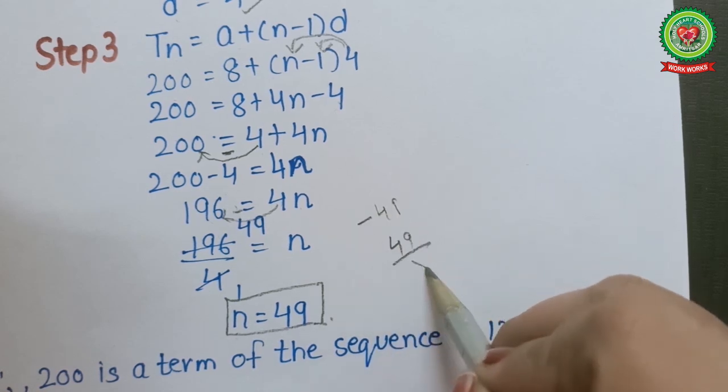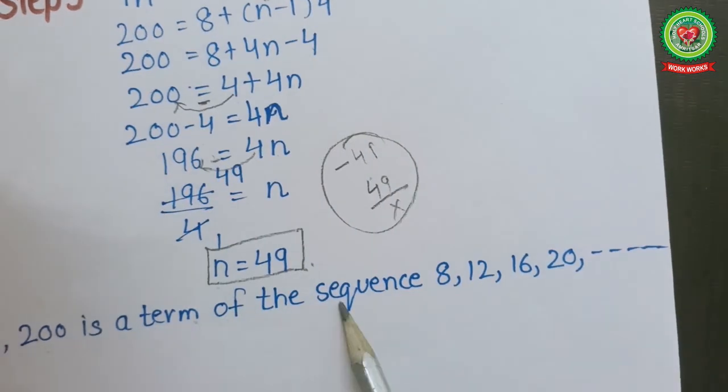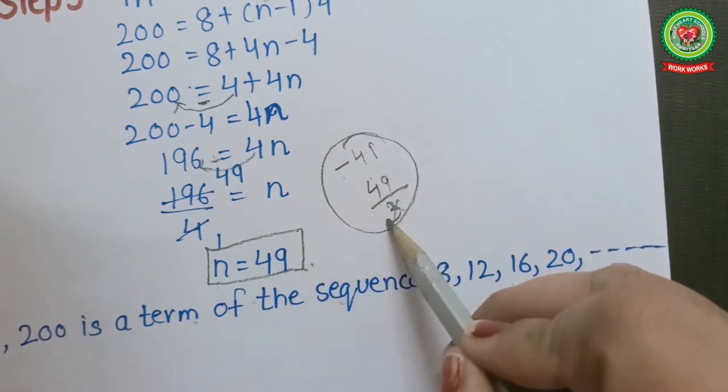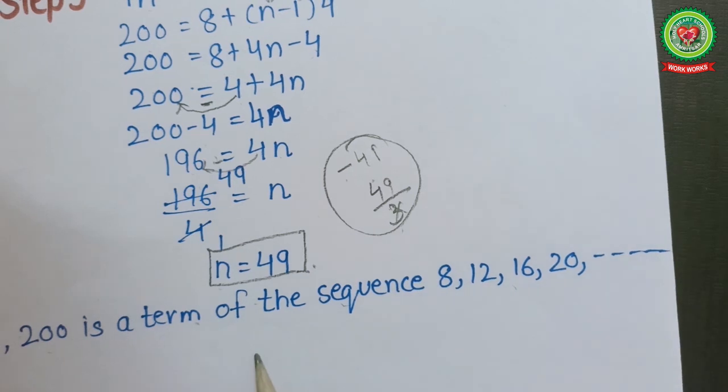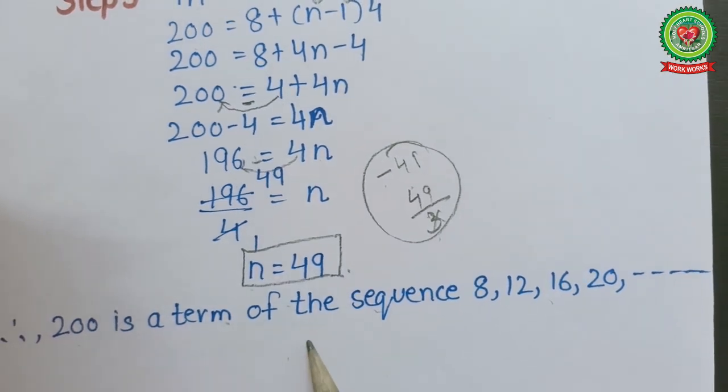Now n = 49. It is neither a negative value nor a fractional value. Therefore, 200 is a term of the sequence. If the value was negative, it would not be a term of the sequence. If the value was a fraction, it would also not be a term of the sequence. I hope you have understood this. You will get a worksheet with related problems of these types. Thank you very much.